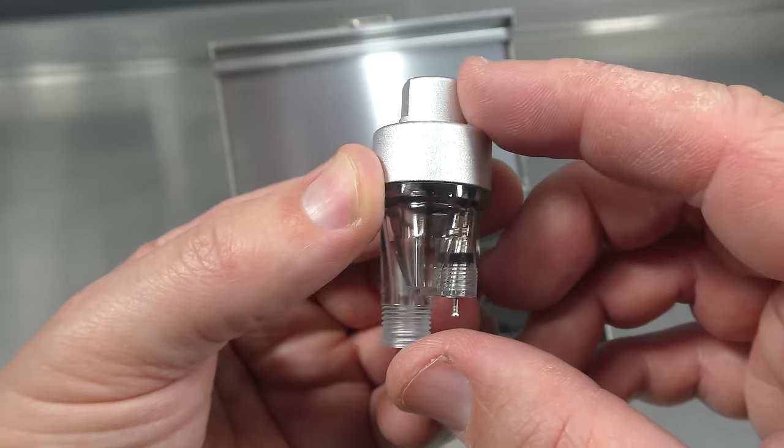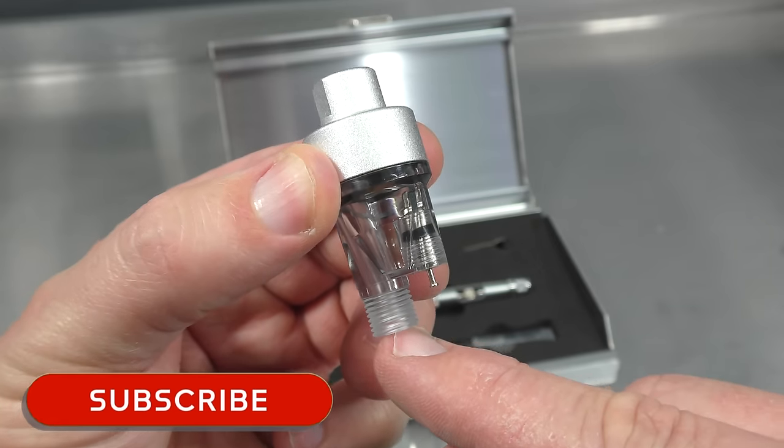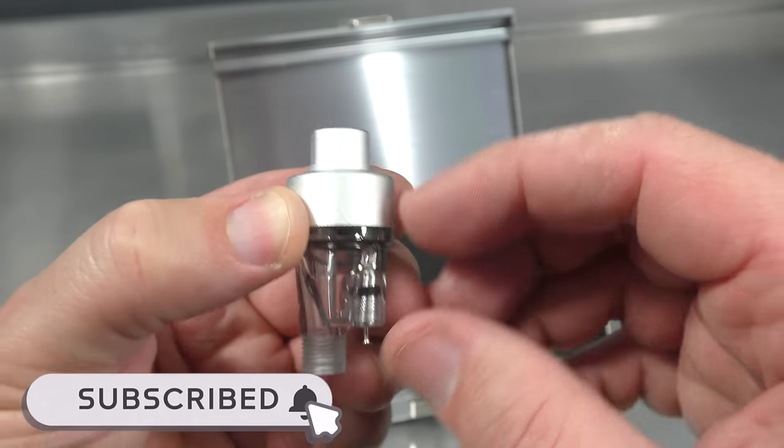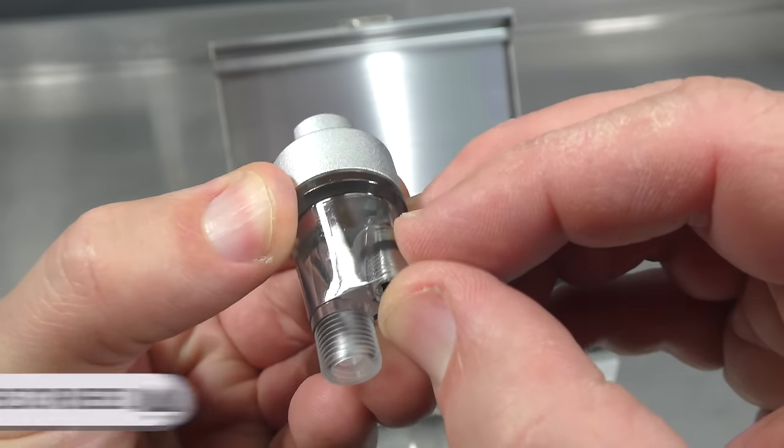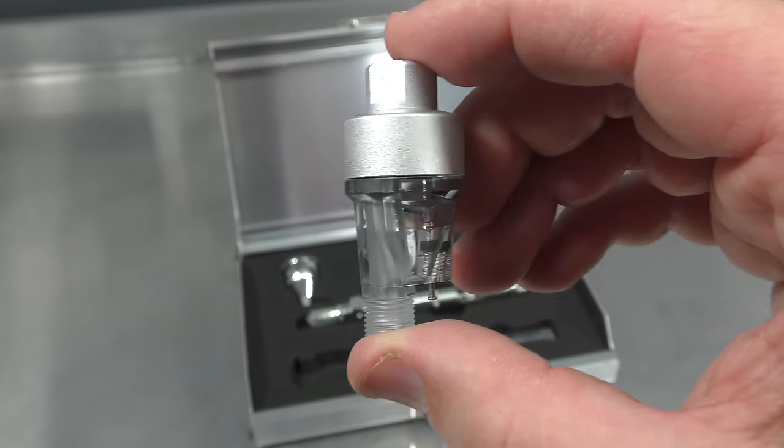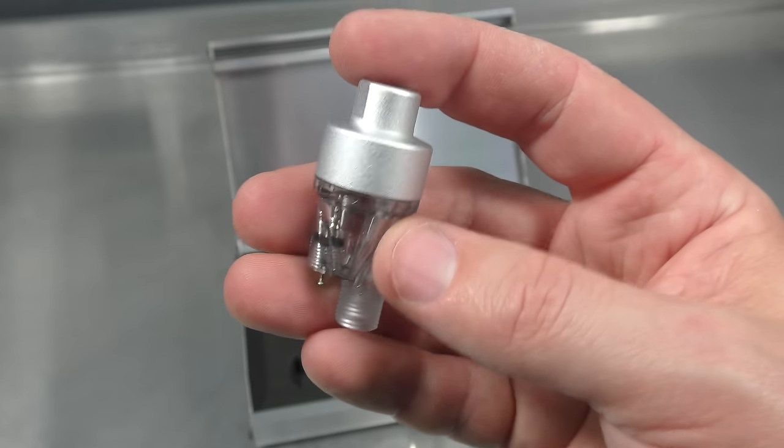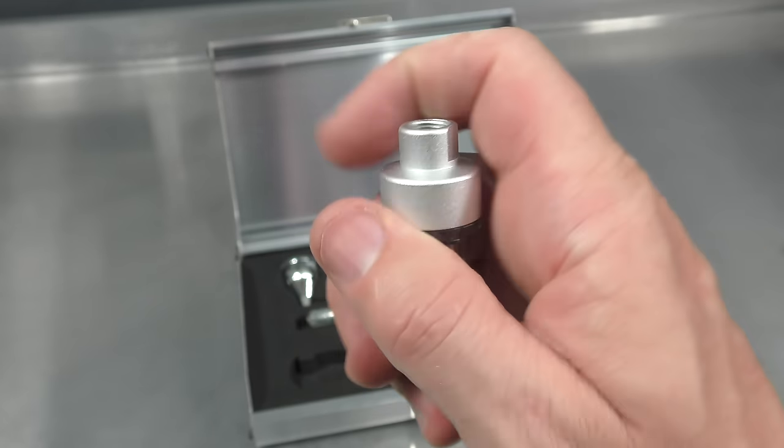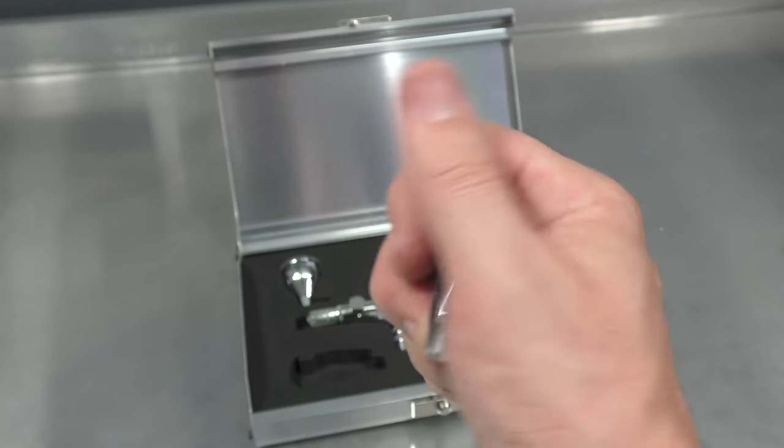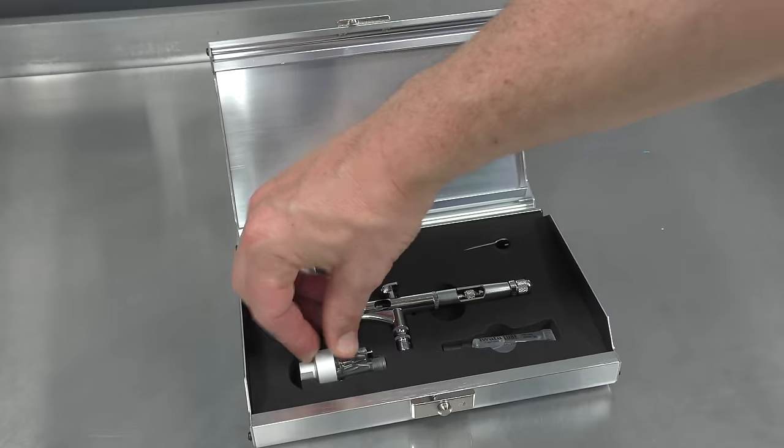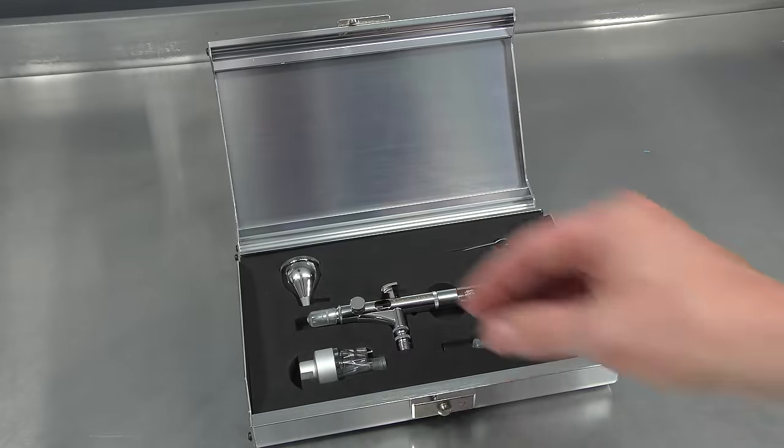Now this is the pistol grip moisture filter. You hook your hose up to here and then this screws onto the airbrush and you've got your little drainage valve there. These are good for capturing that last little bit of moisture. I personally don't use them. I know a lot of people love using them because they help when you grip the airbrush. I'll hook it up later and show you. Personal preference, but at least it comes with it.